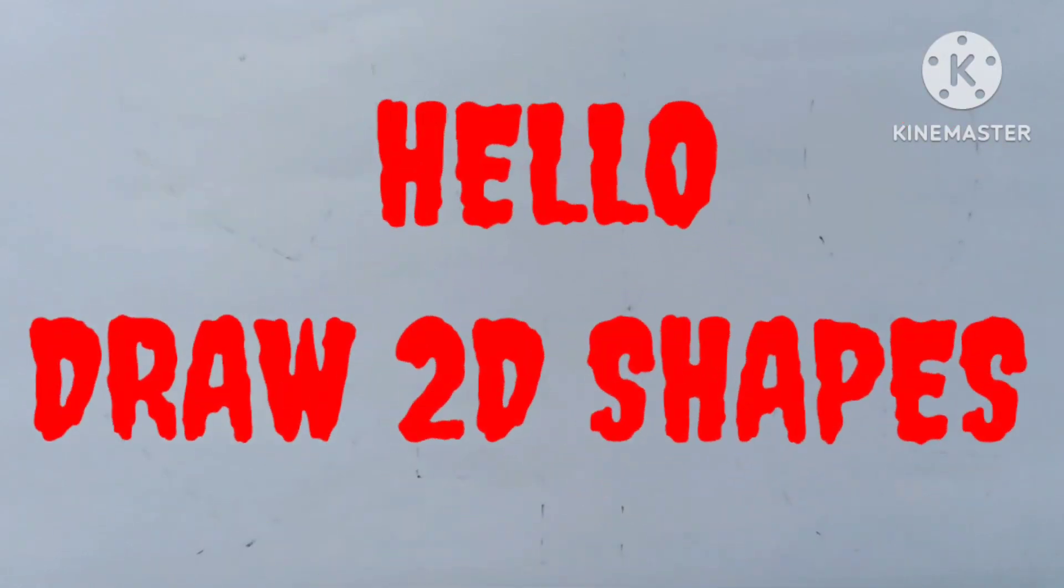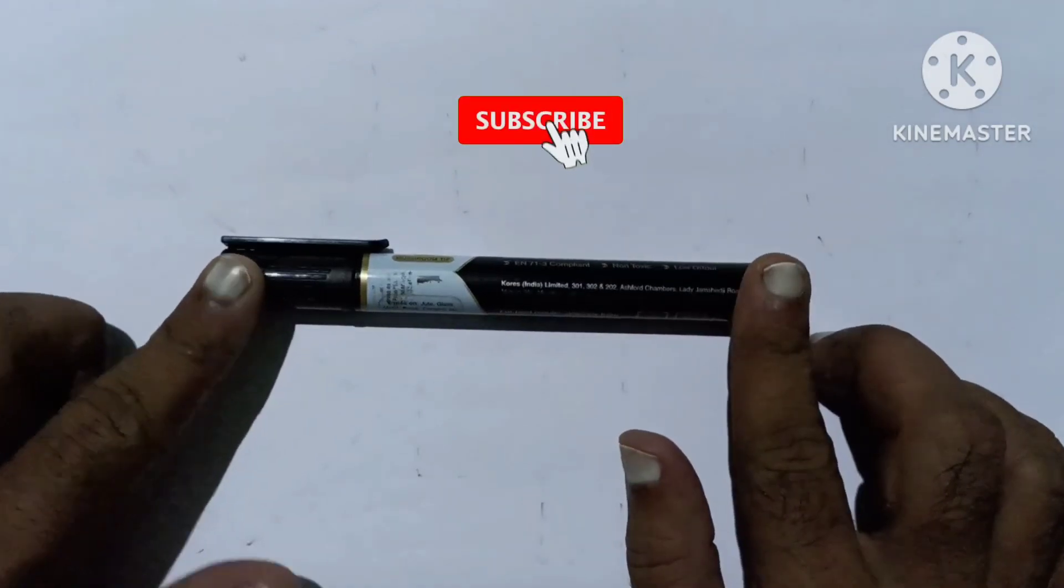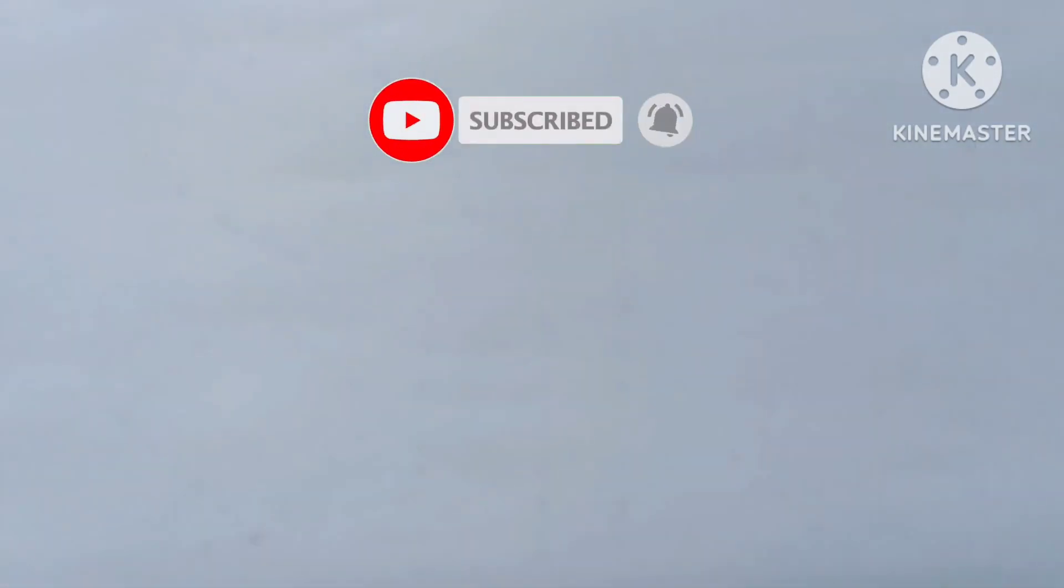Hello kids, let's draw some 2D shapes. Black color, it's a dark black color, let's start.